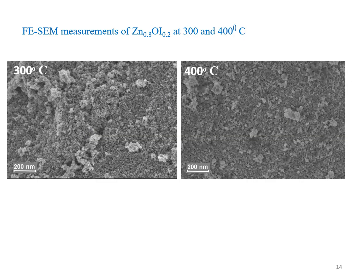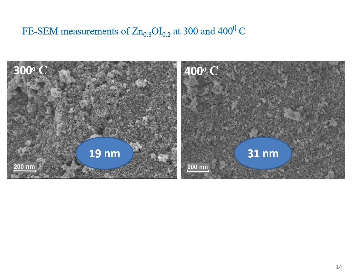FE-SEM images of iodine-doped ZnO powders treated at 300 and 400 Celsius show the increasing in particle size from 19 nanometers to 31 nanometers.